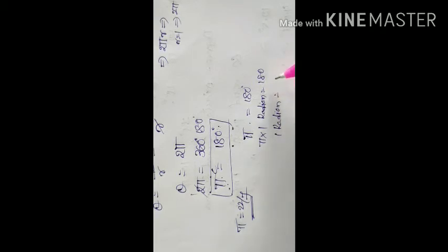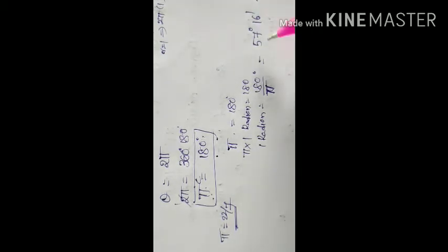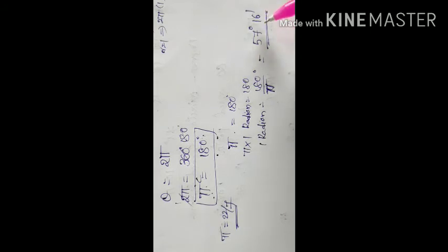Using the approximate value of π as 22/7, this relation enables us to convert radian measure into degrees and degree measure into radians. One radian ≈ 57 degrees 16 minutes, and 1 degree ≈ 0.01746 radians. These are the two important approximate values.